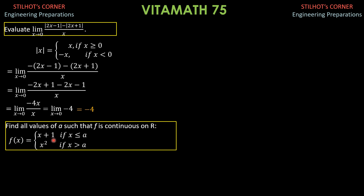Since these are linear and parabolic functions with no denominator or expression that would create indeterminate form, they are continuous functions. We say the limit exists, the function value exists, and we equate them. So f(A) equals A plus 1 equals A squared. The limit of (x plus 1) as x approaches A is A plus 1, and the limit of x squared as x approaches A from the right is A squared.